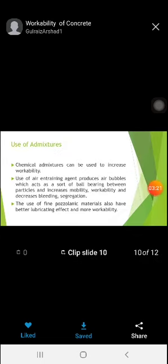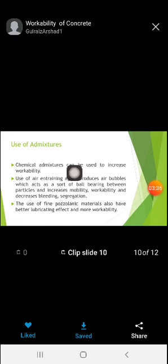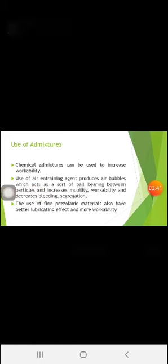The next factor for workability is the use of admixtures. As the name indicates, if we are using admixtures we can control or increase the workability. In some cases we use chemical admixtures like Aromid 400 and superplasticizer, which affect workability. Especially in RMC, workability and setting time are most important while placing concrete from one place to another.